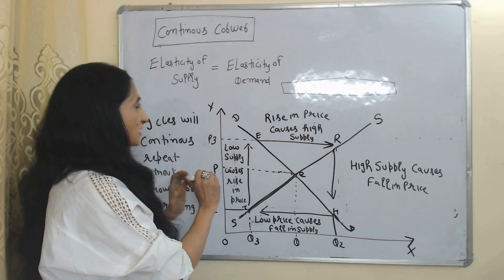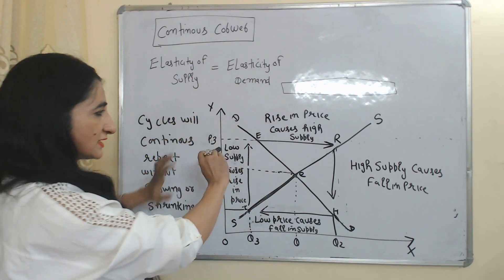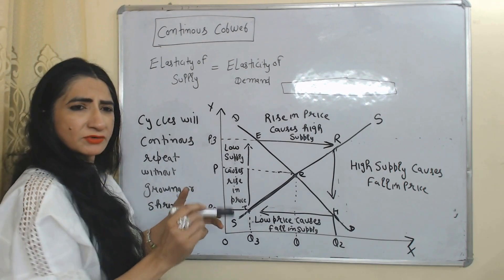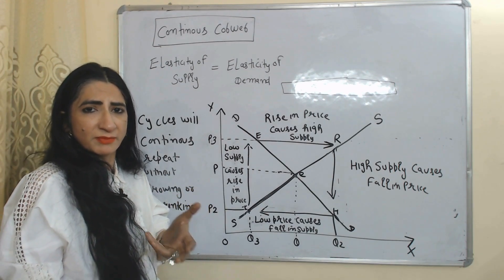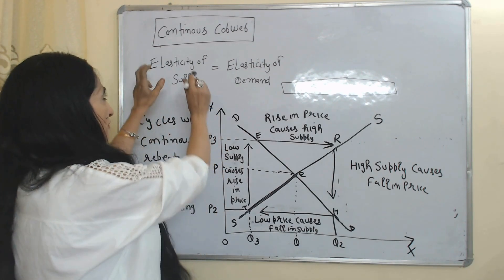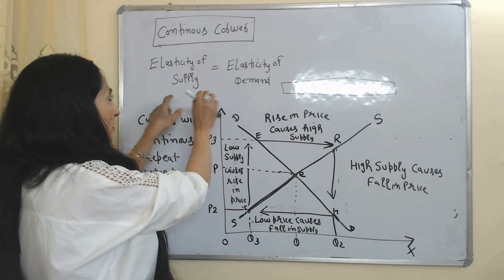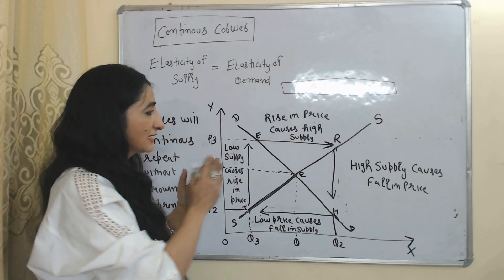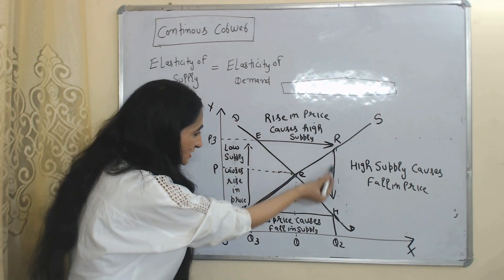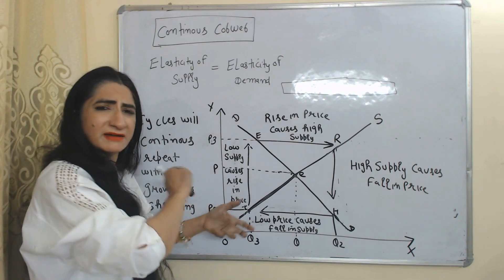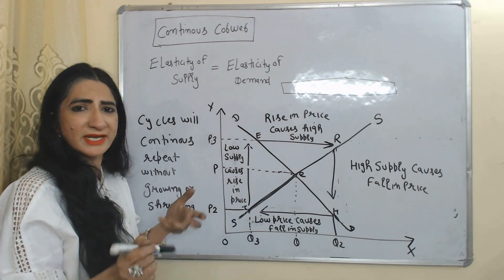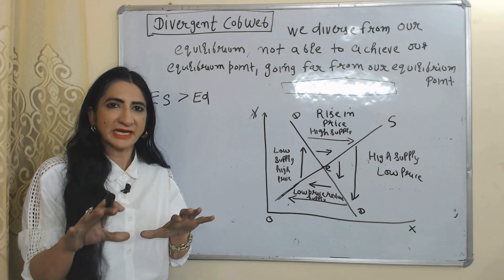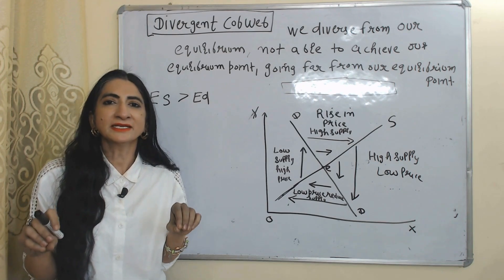In the case of a continuous cobweb, this cycle will continue to repeat without growing or shrinking. But why? Because in the case of a continuous cobweb, elasticity of demand is exactly equal to elasticity of supply. That is why this cycle continuously repeats again and again without growing or shrinking.